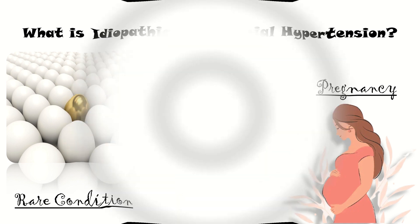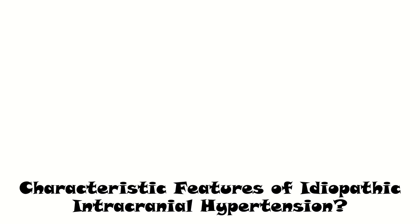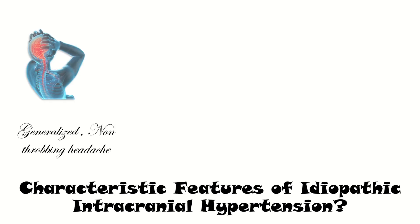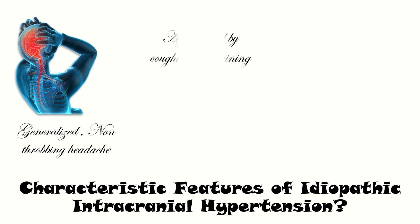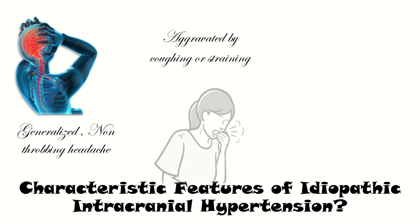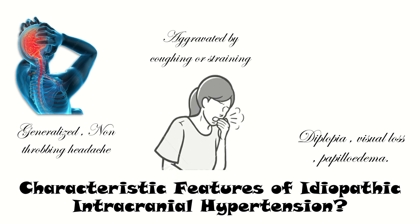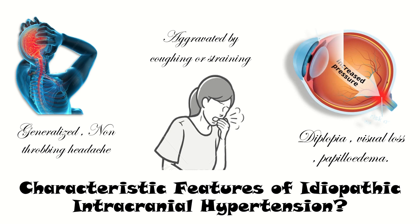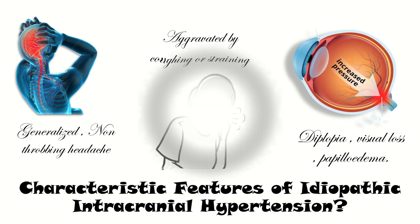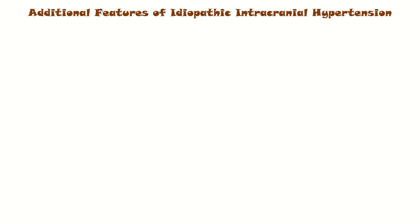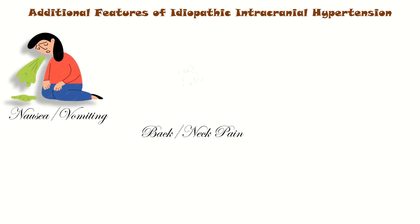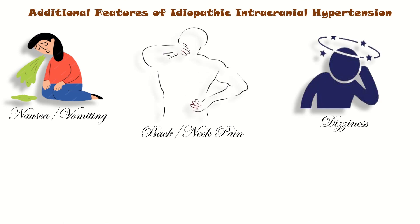The characteristic features of idiopathic intracranial hypertension include generalized non-throbbing headache aggravated by coughing or straining, and associated with diplopia in 38% of cases. Visual loss occurs in 31% of cases with papilledema. Additional features include nausea and vomiting, back and neck pain, dizziness and tinnitus.